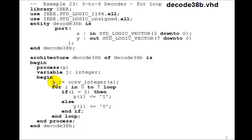Then we'll set j equal to conv_integer(a). We have to use the function conv_integer to convert the standard logic vector, 0 to 7, those 3 bits, to the integer j, 0 to 7.